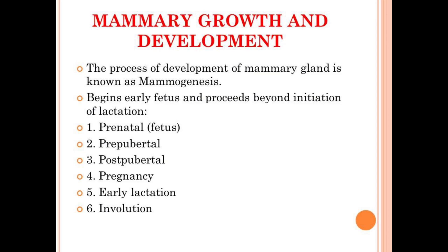Involution is the shrinking of the udder, or the returning of the udder to its original shape and size after lactation. The different stages of mammogenesis contribute different structures for the development of the udder, increasing its size as well as shape. When the process of lactation is completed, the developmental changes inside the udder in its shape and size will reverse back, and this process is known as involution.